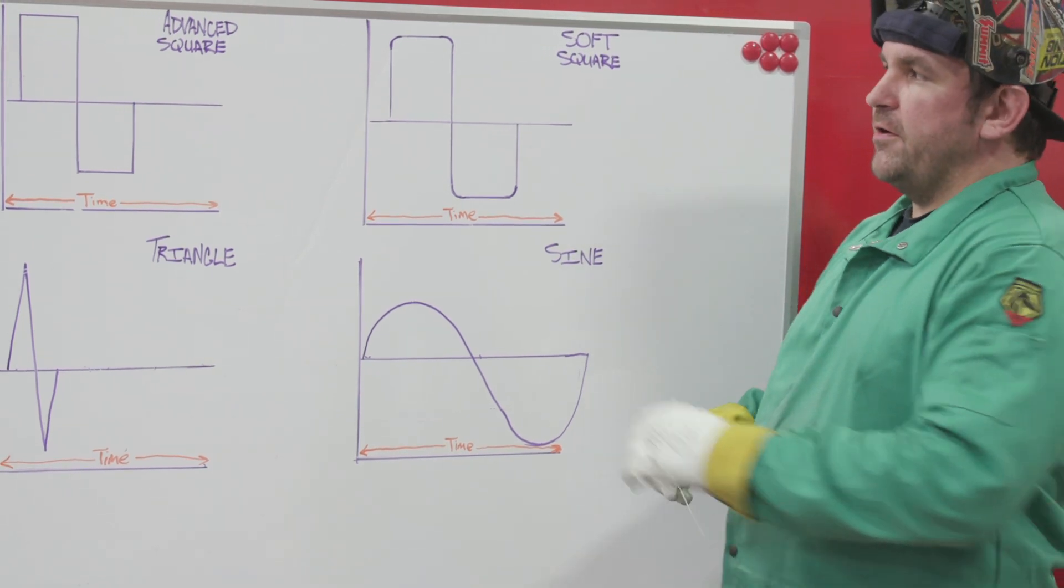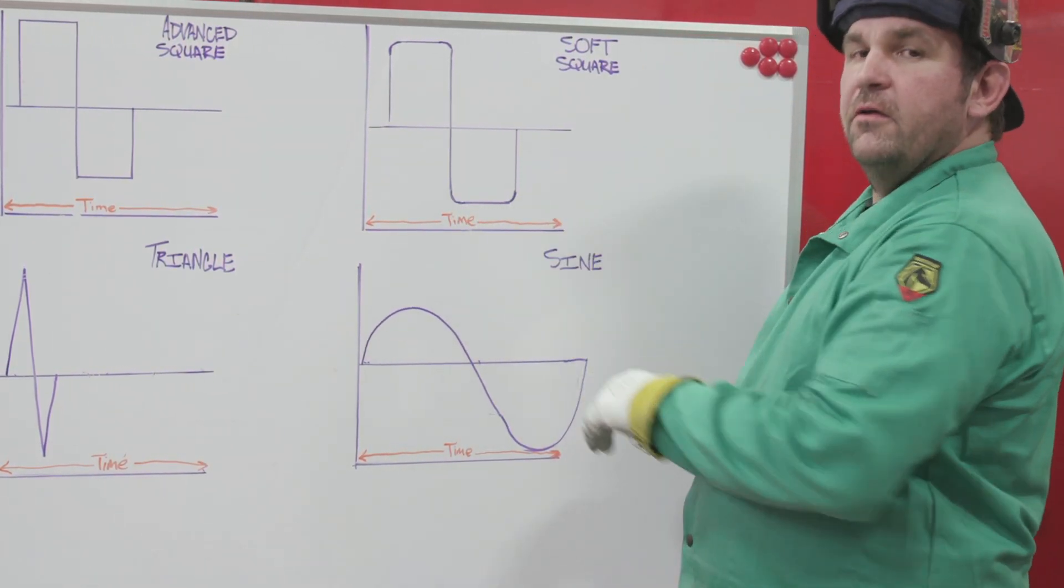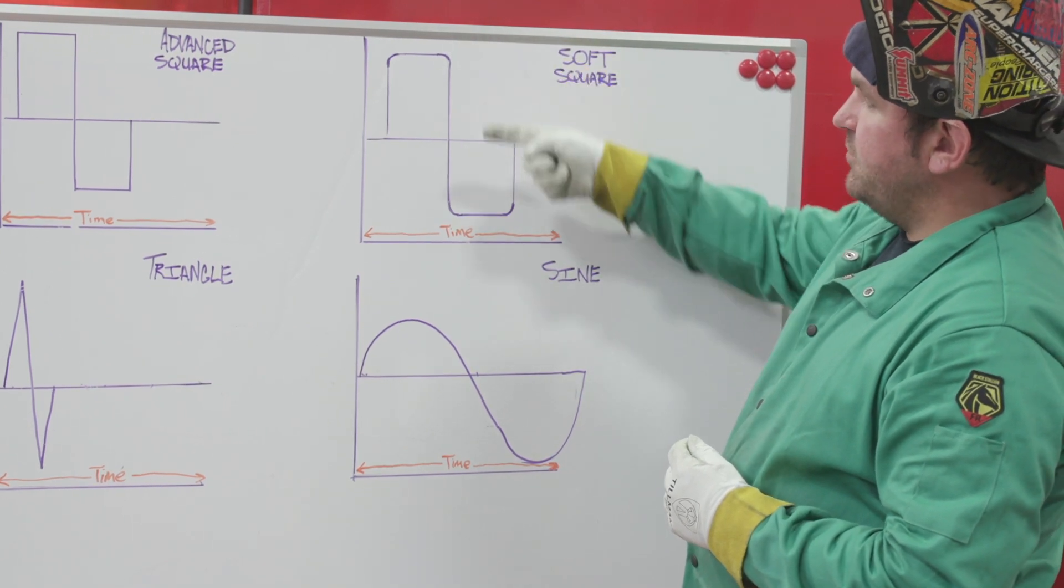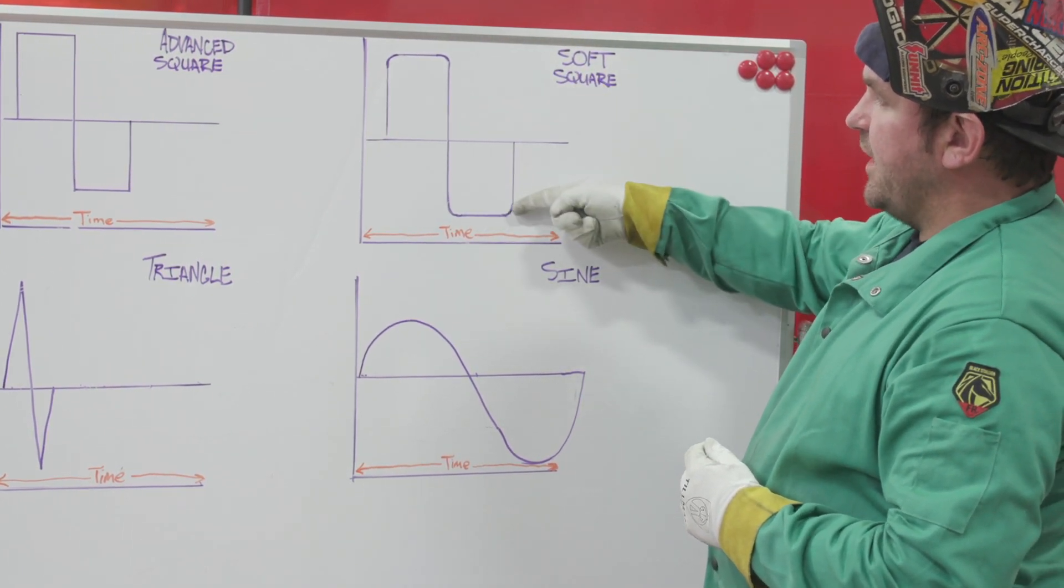Next, we're moving on to soft square. When you compare advanced square and soft square, they look pretty much the same. But what we have is a maximum time at our peaks, electrode positive, electrode negative.